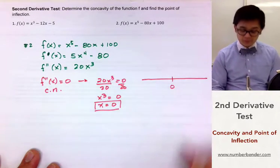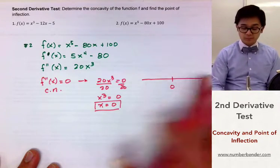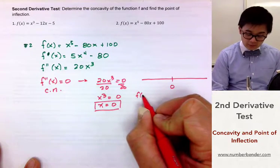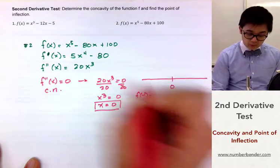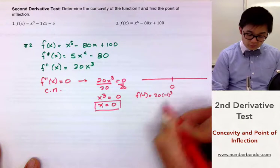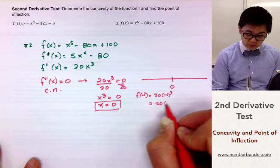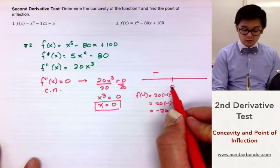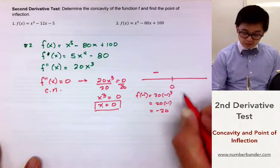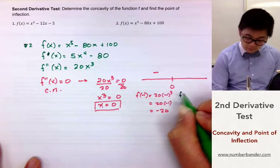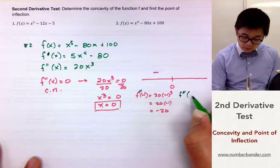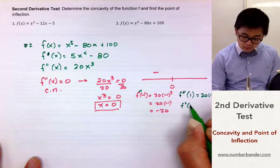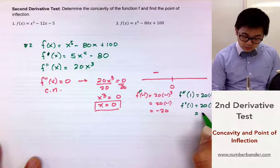Let's check whether the concavity is positive or negative on each interval. Starting with the left interval, we use f double prime of negative 1: 20 times negative 1 cubed equals 20 times negative 1, which is negative 20. For the right interval, f double prime of positive 1: 20 times 1 cubed equals 20 times 1, which is positive 20.